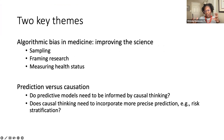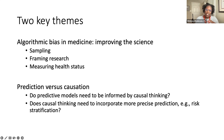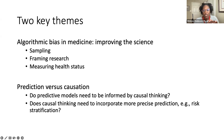I'm going to hit on two key themes in this talk. It's mostly going to center around the idea of algorithmic bias in medicine and how we improve this science. I'm going to make an argument that sampling, the way we frame research, and the way we measure health status are all critical in having a data science that is more equitable in medicine. And if we have time, I might also get into this tension between prediction and causation.